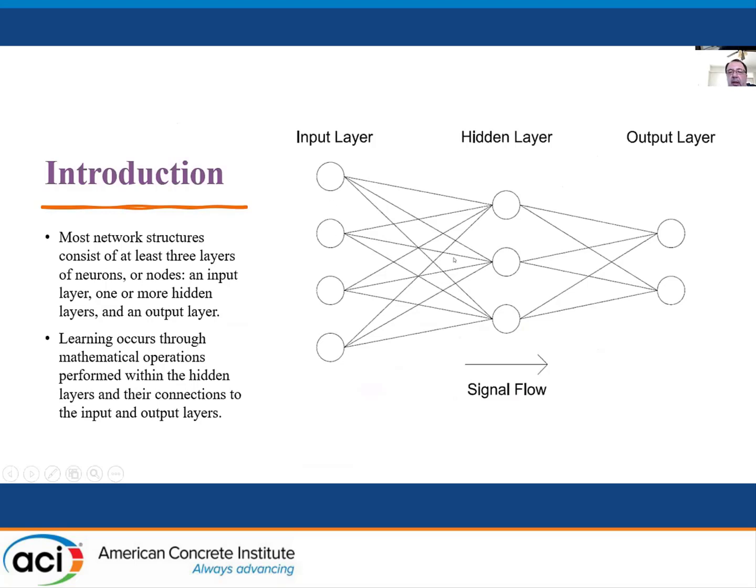Artificial neural networks have layers, the input layer, and sometimes one or more than one hidden layer where the learning happens, and an output layer. The learning occurs through mathematical operations performed within the hidden layers and their connection to the input and output layers.